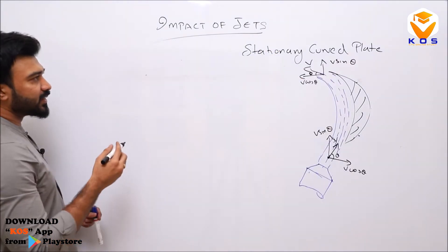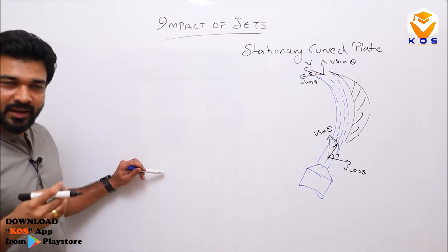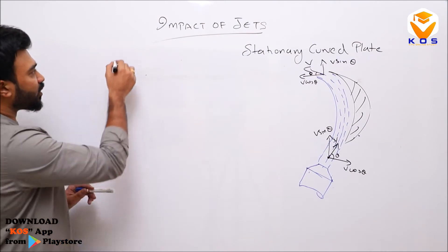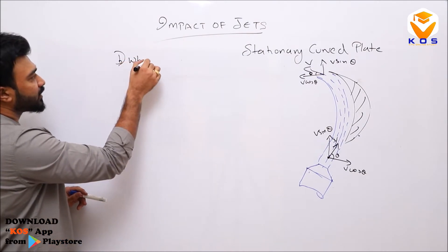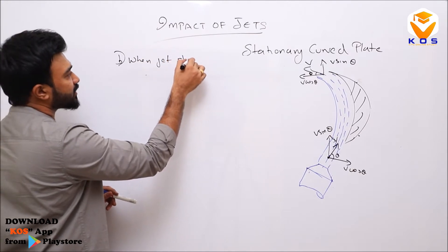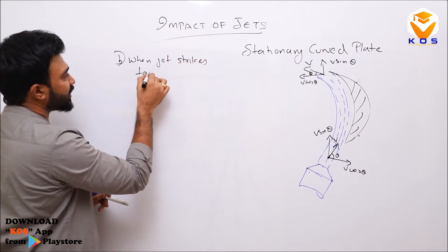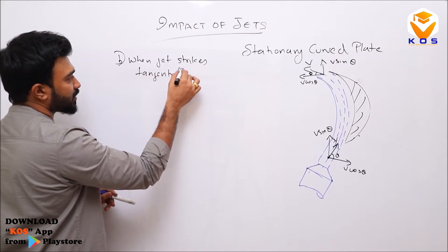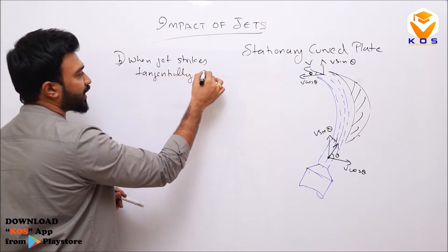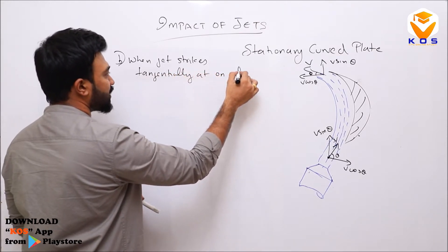Next, we have the stationary curved plate — this is another topic — when a jet strikes tangentially at one end.